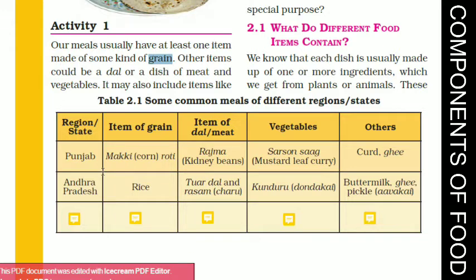Now let's see another state, Andhra Pradesh. The item of grain is rice. The item of dal or meat is toor dal or rasam, called charu. Vegetables include kunduru, and others could be buttermilk, ghee, and pickle. This is the dish of Andhra Pradesh.